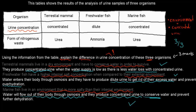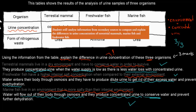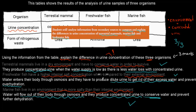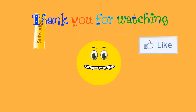This question comes from the dot point: students will analyze information from secondary sources to compare and explain. We compared the three organisms and explained the difference in urine concentration of terrestrial mammals, marine fish, and freshwater fish — exactly what we just did. Hopefully that was helpful. Thank you for watching.